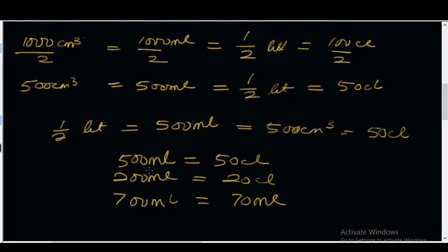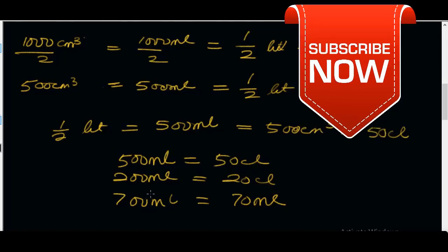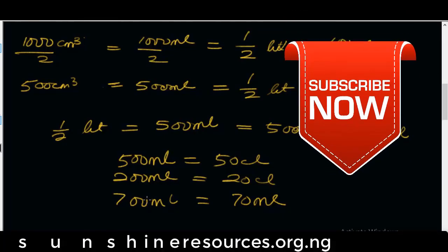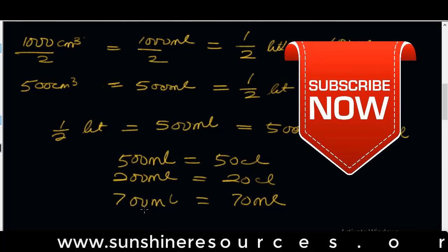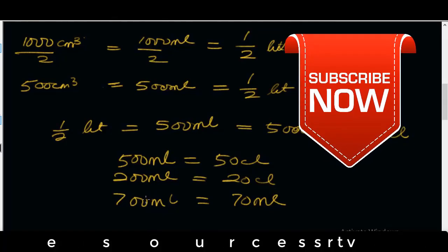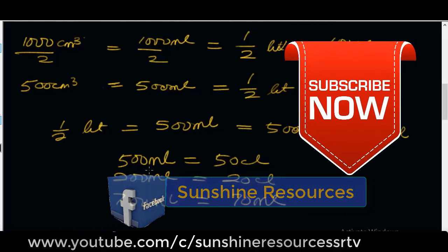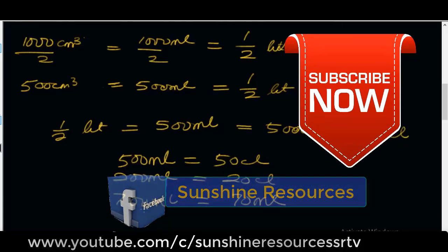You can get measuring devices like beakers, conical flasks, and measuring cylinders for you to be able to get these measurements right. We've come to the end of this lesson today. Thank you very much for watching, and God bless you. If you like this video, give us a thumbs up and subscribe to our YouTube channel. You can visit our website at www.sonshireresources.org.ng and follow us on our Facebook page, Sunshine Resources.